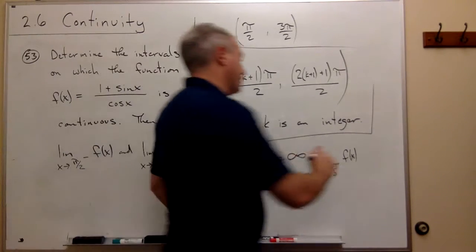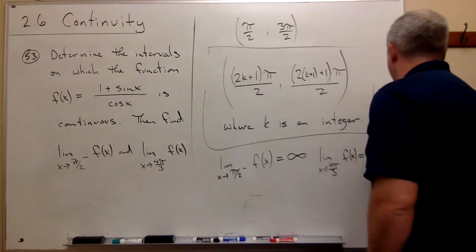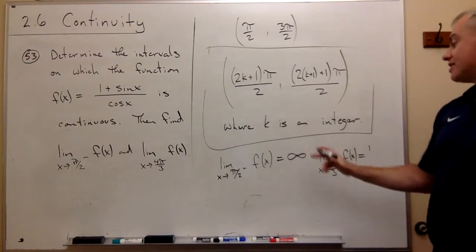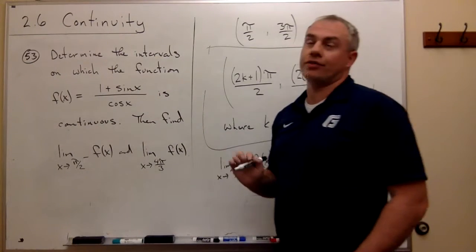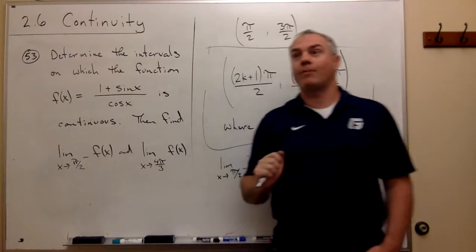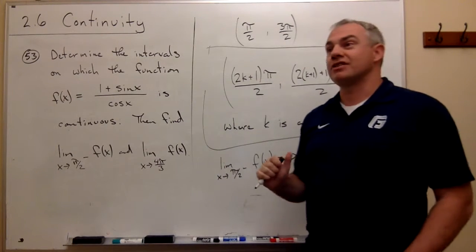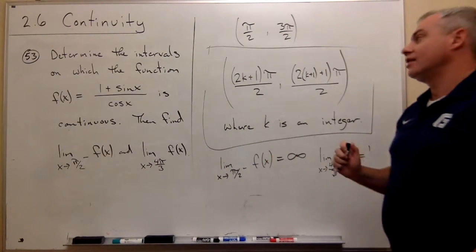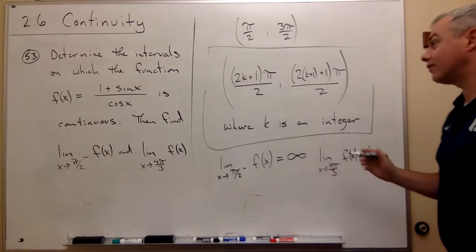So the answer is going to be, well on top I get 1 plus sine of 4 pi over 3. So sine of 4 pi over 3 is going to be negative root 3 over 2.